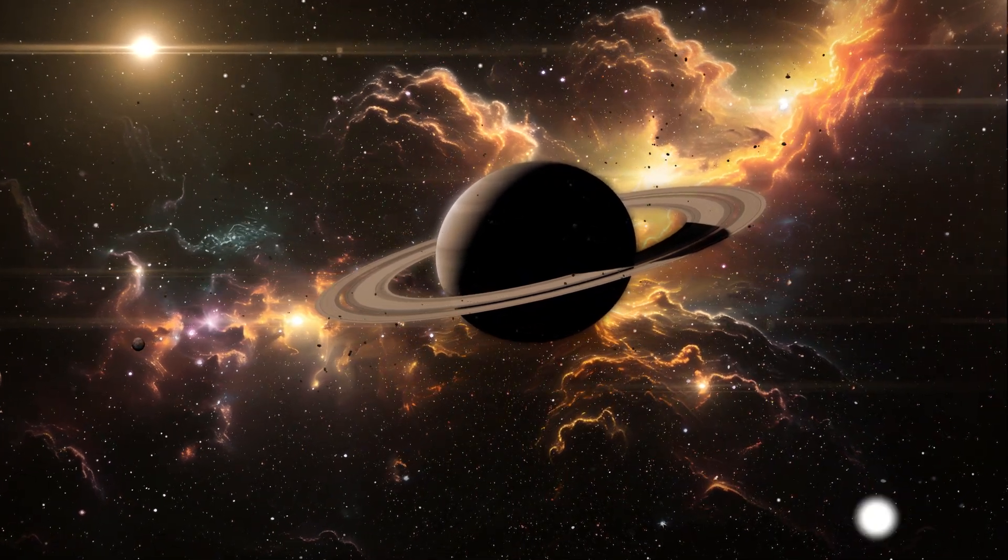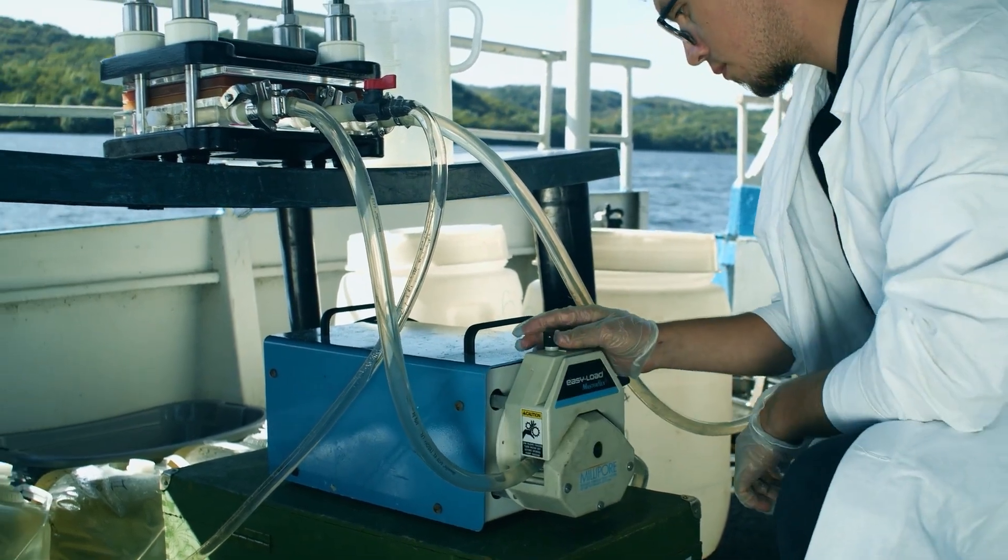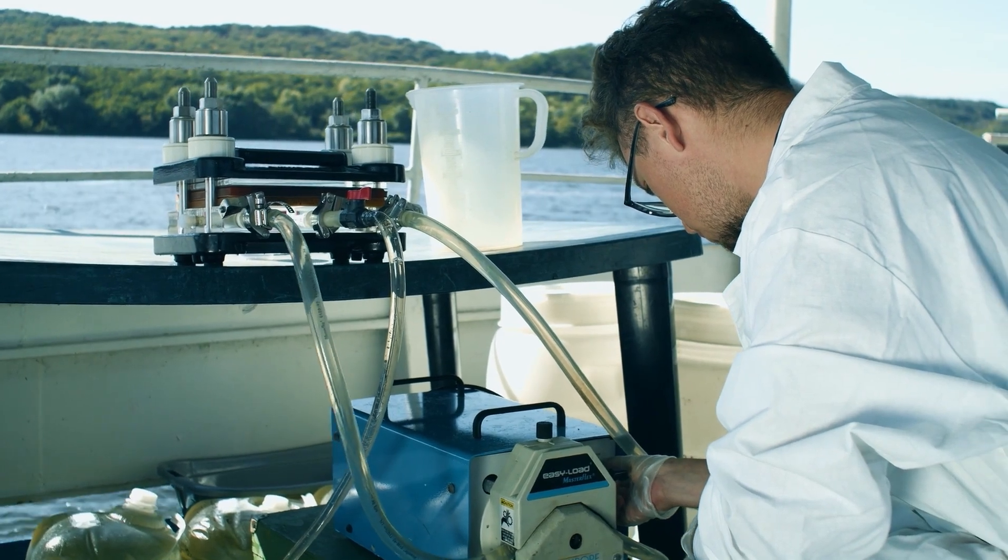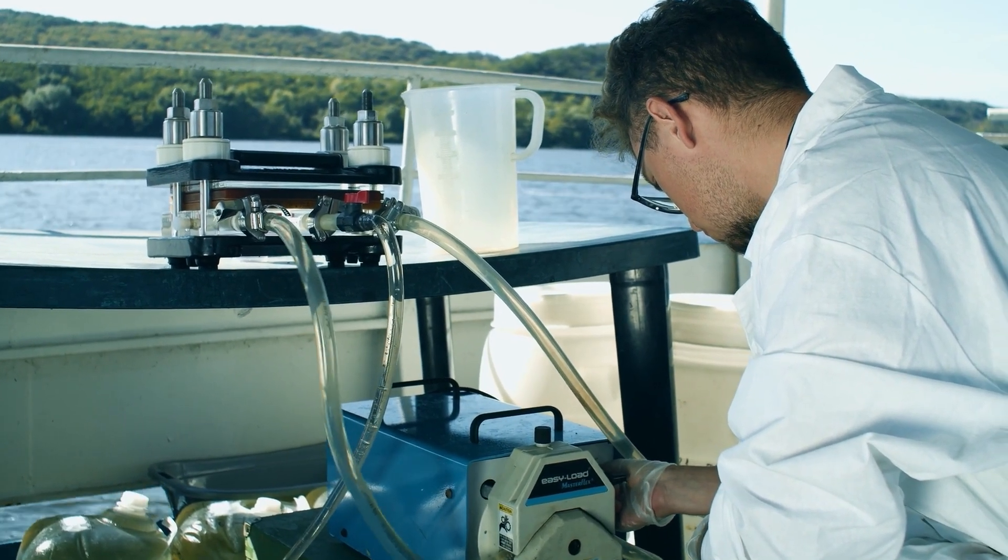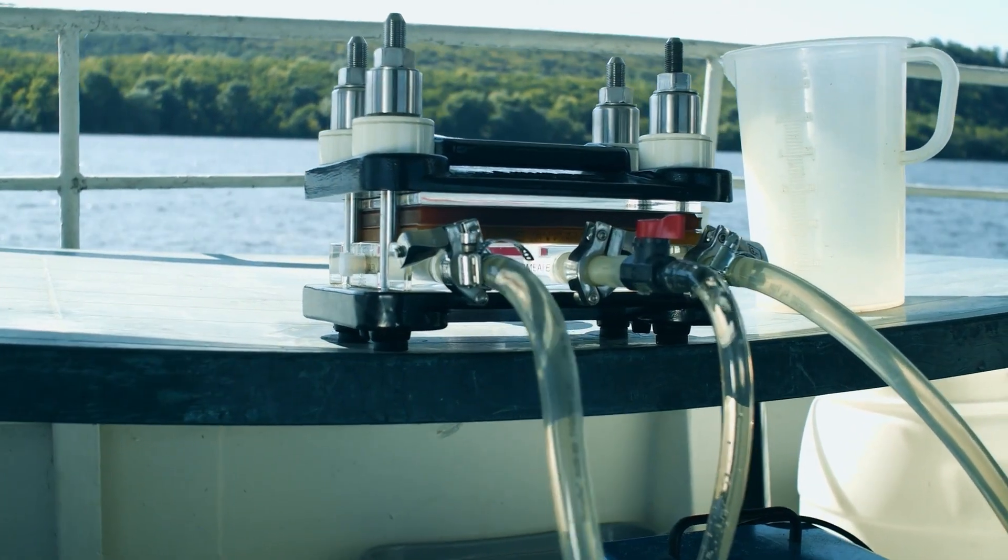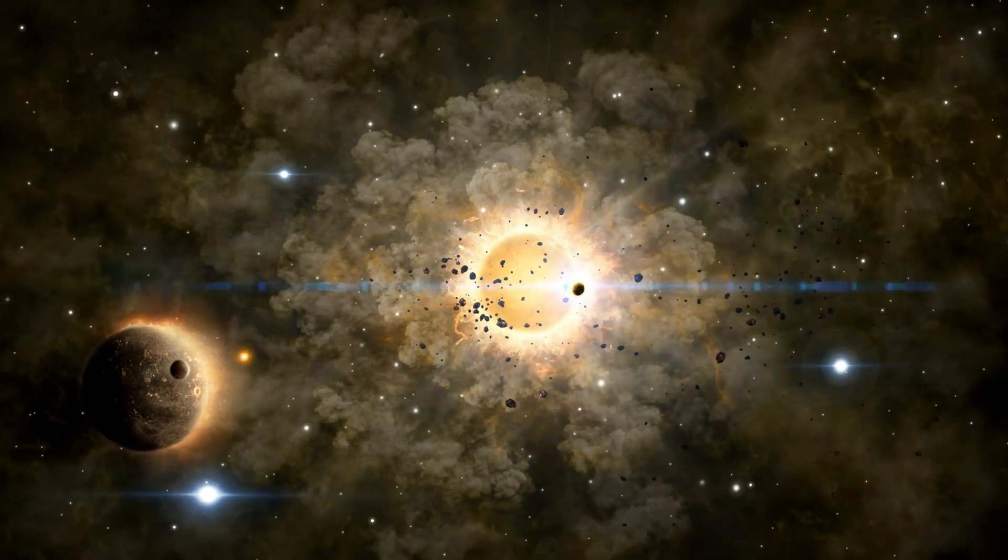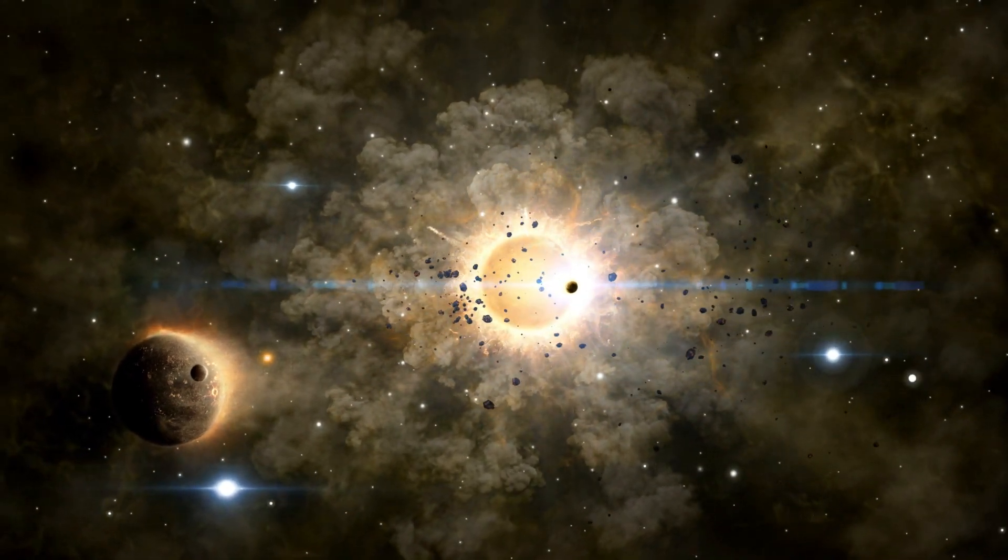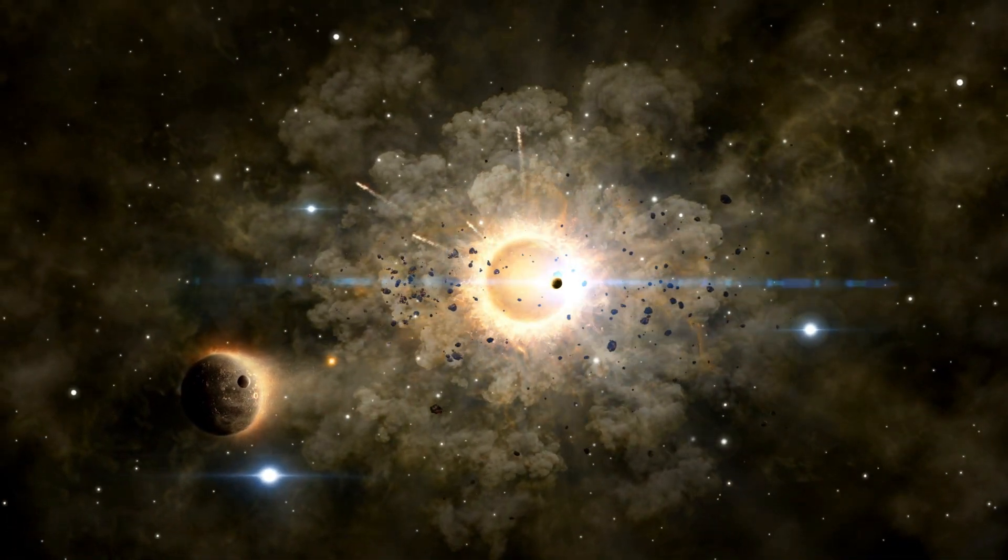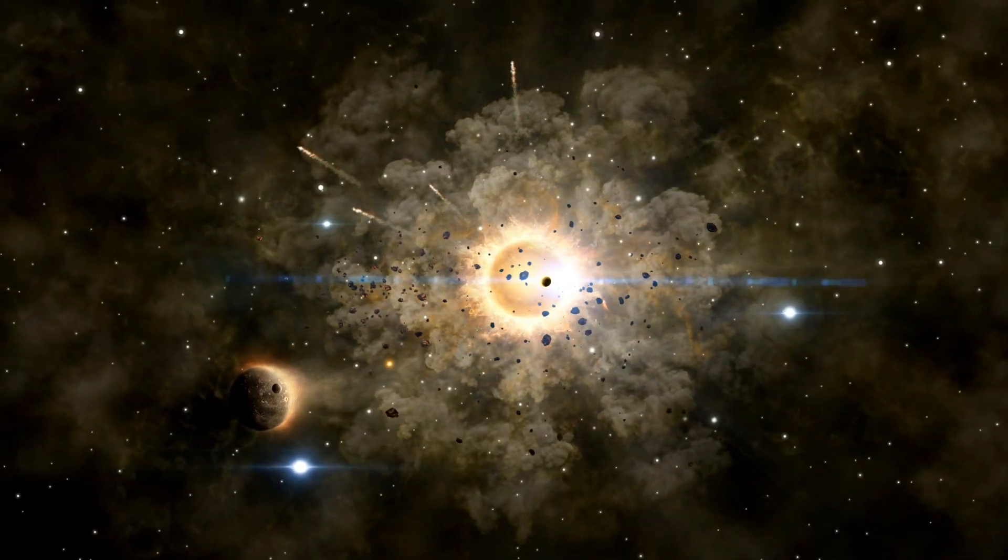We know dark energy as the mysterious force driving the universe's accelerated expansion. But could it also hold secrets about the universe's true age? Recent observations suggest that dark energy might not be as constant as we once believed. Instead, it could be evolving, altering the universe's expansion rate over time in ways that challenge our understanding of the cosmos. If dark energy has changed over time, it could explain the rapid formation of galaxies and the apparent contradictions in the universe's timeline. But it also opens up a Pandora's box of new questions.